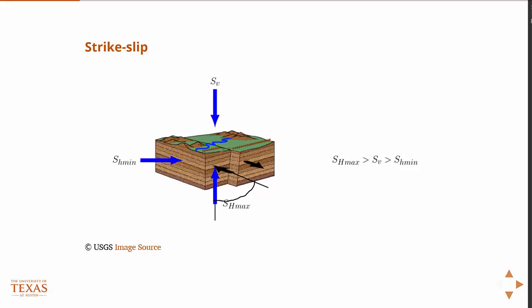But the horizontal SH min and SH max are not necessarily in the direction along parallel to the fault line. So they cross it at some angle in the strike slip scenario.